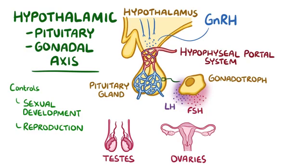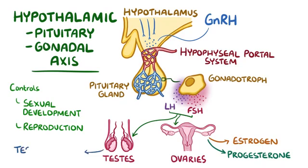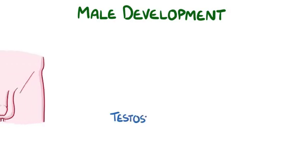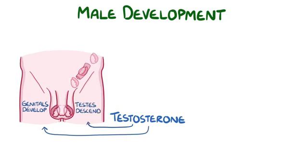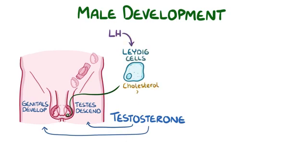These gonadotropin hormones then stimulate the gonads to produce sex-specific hormones — oestrogen and progesterone in women, and testosterone in men. Early on in male development, testosterone helps the external sex organs to differentiate into male genitals and causes the testes to descend from the abdomen into the scrotal sac. During puberty, the Leydig cells of the testes respond to luteinizing hormone by converting more cholesterol into testosterone. The high levels of testosterone lead to the development of primary sex characteristics, like penile and testicular growth.